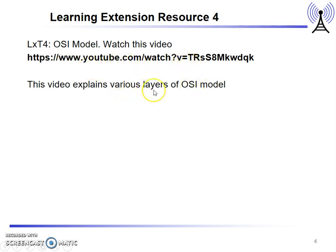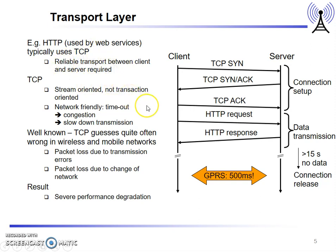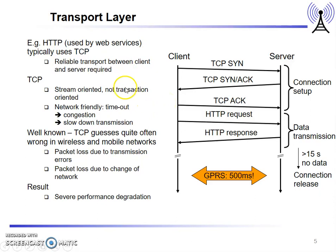Students should have gone through the YouTube video explaining the various layers of the OSI model. At the transport layer, we have the TCP protocol, which is a reliable transmission protocol that uses a three-way handshake method. The client sends a TCP synchronize packet to the server, the server acknowledges with a SYN-ACK packet, and the client again acknowledges with a TCP acknowledgement. These three packets are used for connection setup. Many protocols use TCP — for example, HTTP uses TCP for data transmission, sending HTTP requests and receiving HTTP responses.